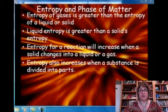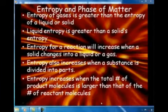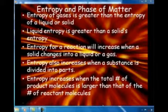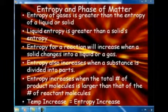Entropy also increases when a substance is divided into parts — for instance, when a substance is crushed into smaller particles or ground up, or when an ionic solid is dissolved in water, breaking it into its component ions. Another factor is the total number of product molecules compared to reactant molecules: entropy increases when the total number of molecules at the end of a process is greater than at the beginning. An increase in temperature will also result in an increase in entropy, because it makes particles move more and creates more chaos as they bump into each other.